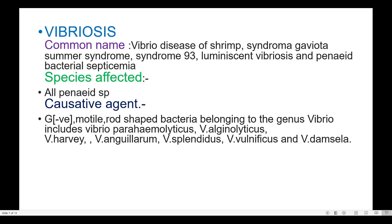Species affected: All Penaeid species. Causative agent: Gram-negative, motile, rod-shaped bacteria belonging to the genus Vibrio, including Vibrio parahaemolyticus, Vibrio alginolyticus, Vibrio harveyi, Vibrio anguillarum, Vibrio splendidus, Vibrio vulnificus, and Vibrio damsela.